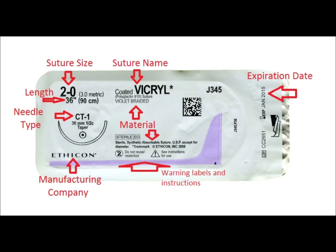When identifying a suture packet, you will find suture size usually located in the upper left corner of its packet, followed by its suture length and needle type. Suture name is located in the center and its type of material right below. Always check the expiration date of a suture before use.